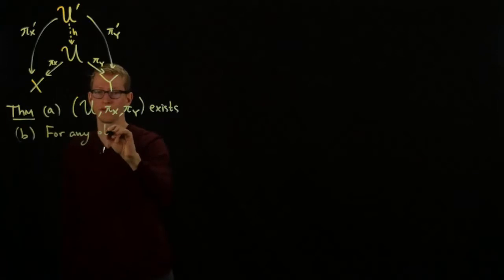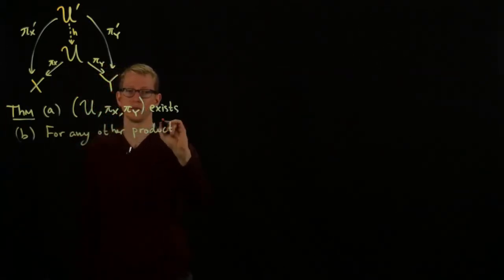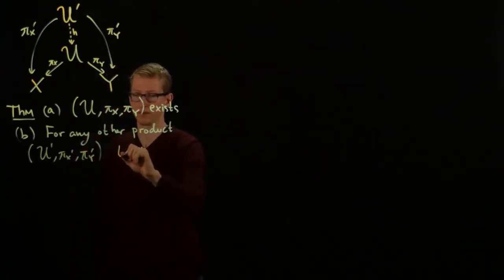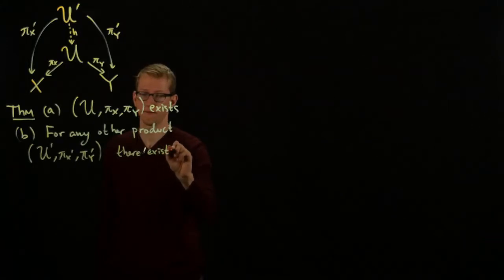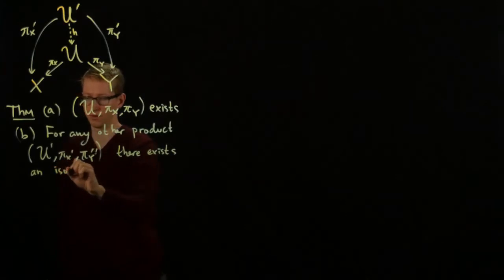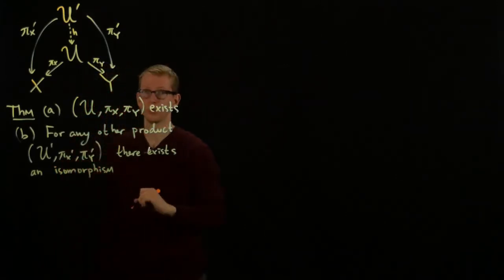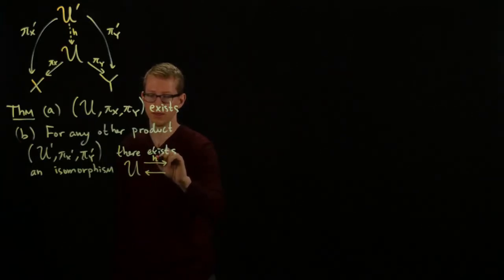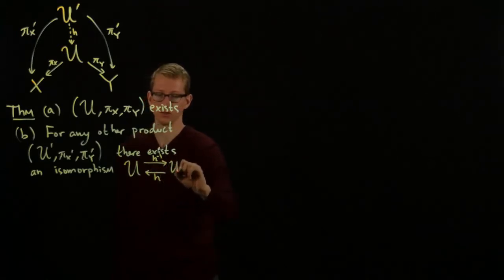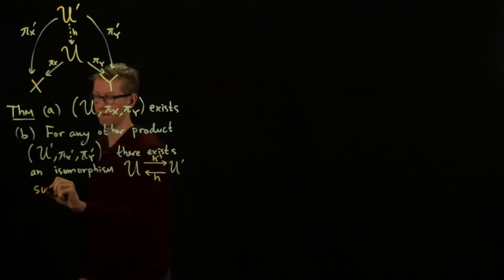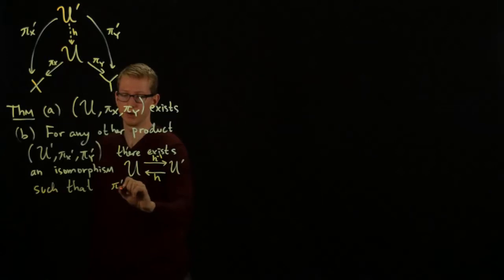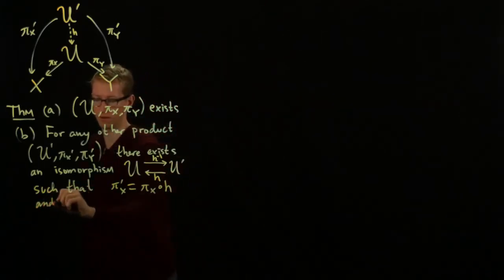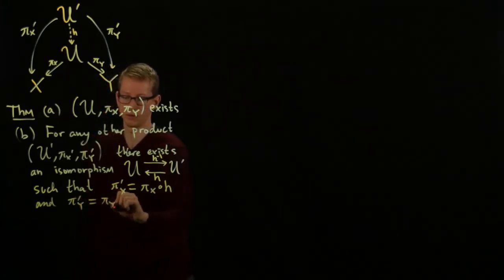For any other product, such as, and now here we'll use the same notation as above, so we'll call it U' πX' πY'. There exists an isomorphism, which is a bijection, between U' and U, let's call this H inverse, and here I have H, such that π'X is equal to the projection onto the first factor from the product and the projection onto the second product.